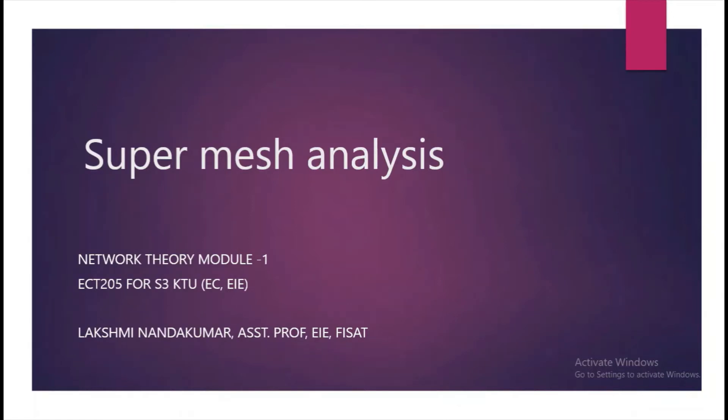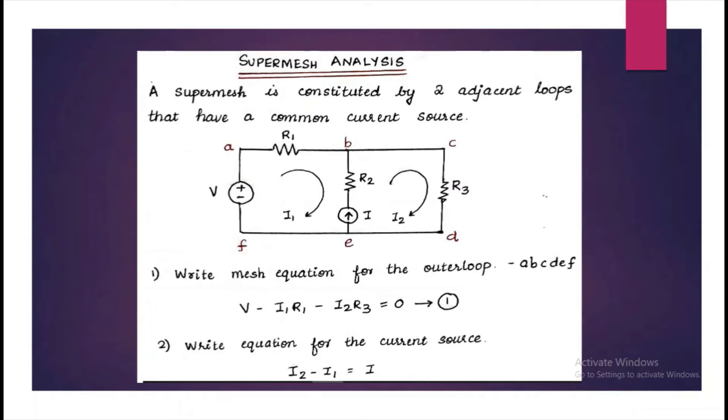Welcome to the third topic, Super Mesh Analysis in Network Theory. A super mesh constitutes of two adjacent loops with a common current source for them. To solve such a problem, we can't write ordinary mesh equations. Instead, we will write two equations, the first one being mesh equation for the outer loop.